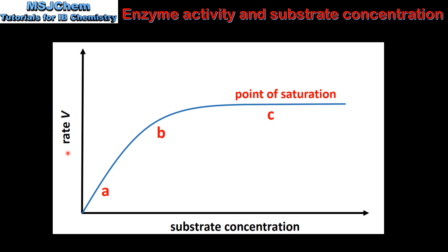We'll start by looking at a graph of the rate of reaction of an enzyme against the substrate concentration. At point A on the graph the rate of reaction is proportional to the substrate concentration. At point B the rate of reaction starts to decrease, and at point C the rate of reaction is constant — this is the point of saturation.